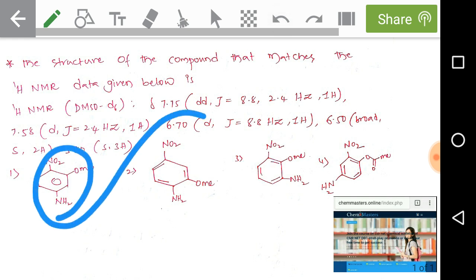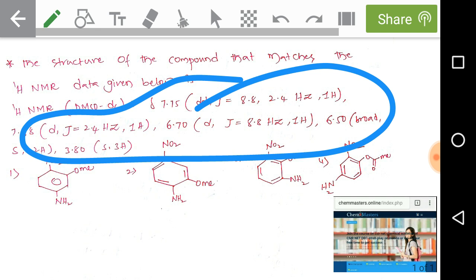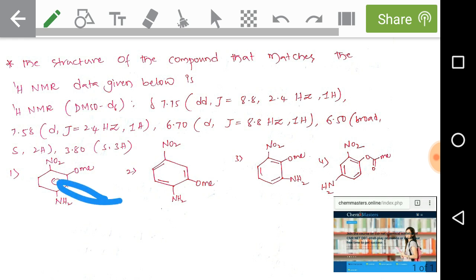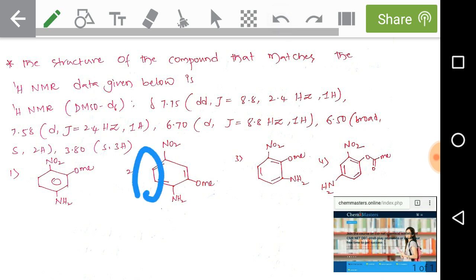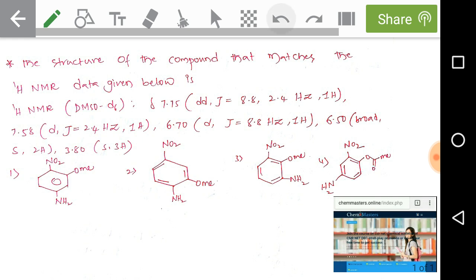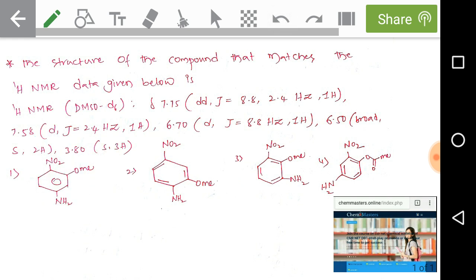Now looking at the remaining three options, they all have suitable forms of HNMR data. The first compound also has two ortho hydrogens and one meta hydrogen suitable for the given data. The second one also has two hydrogens ortho to each other and one meta hydrogen. The fourth one similarly has two hydrogens ortho to each other and one in meta position. These three are in competition. We need to check the substituent effects on the benzene ring — NH2, methoxy group, and NO2 group are present on all these compounds.